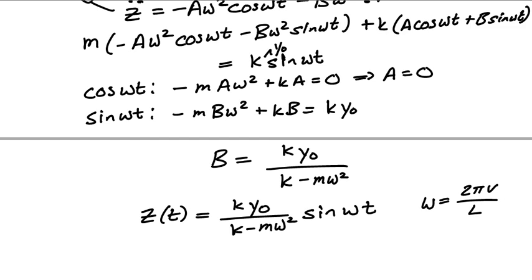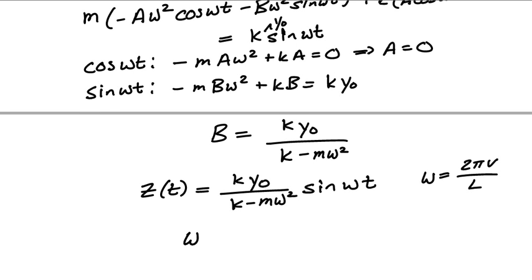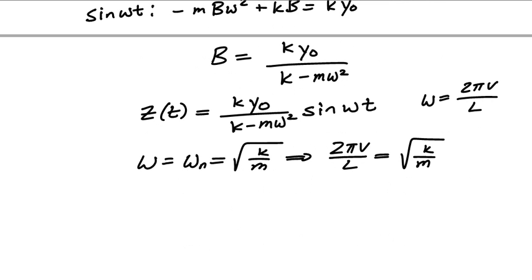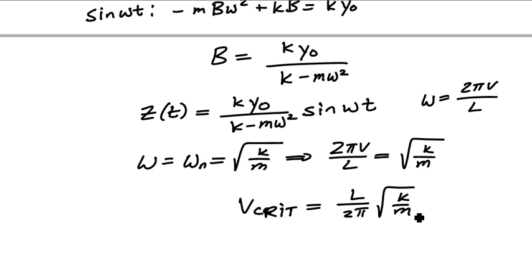To find the critical speed for resonance, resonance occurs when ω equals ω_n equals the square root of k over m. This means 2π v over L equals sqrt(k/m), so the critical speed v_crit equals L divided by 2π times the square root of k over m. That gives us both the amplitude of the excitation and the critical speed — one you won't want to drive at if you want the trailer to stay on the road. Best of luck as you work to reproduce this.